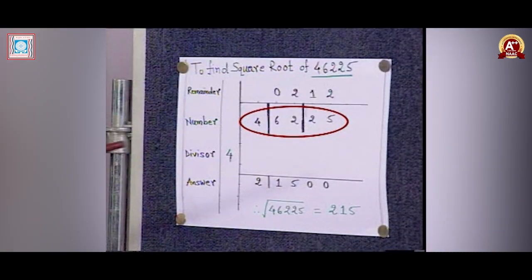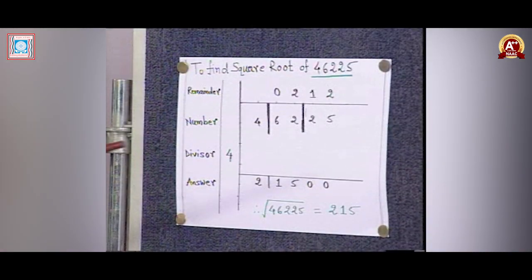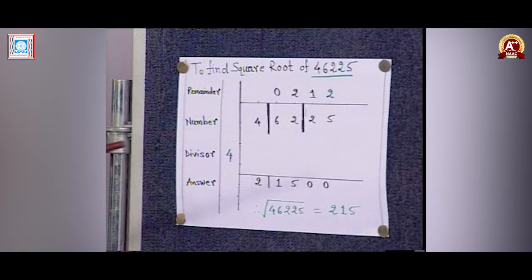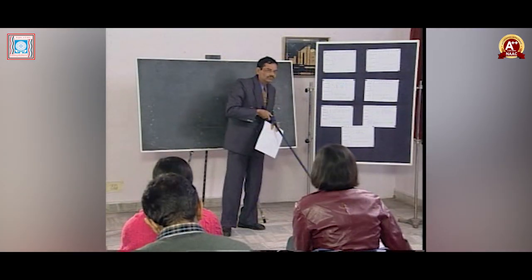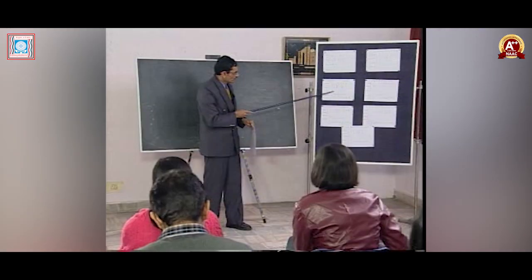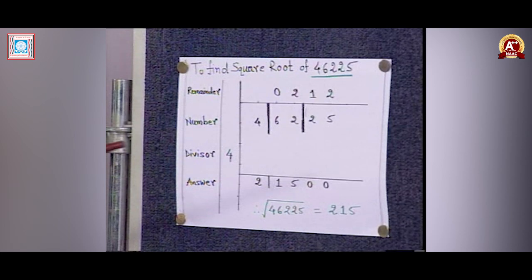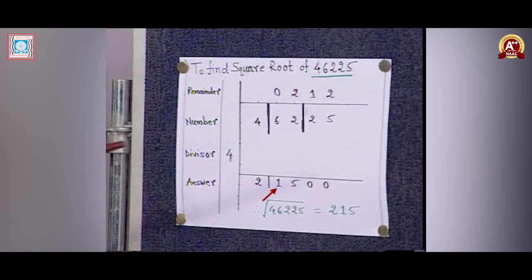Find the square root of 46225. The teacher asks the steps interactively. Group the digits from right to left: first group 25, second group 62, leftmost group 4. We choose the number whose square is nearest lower to 4, which is 2. Write 2 in the answer line. Divisor is 2 into 2 equals 4. And 4 minus 2 squared equals 4 minus 4 equals 0, which is the first remainder. Next dividend is 06 divided by 4: quotient 1, remainder 2.